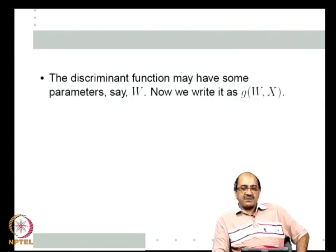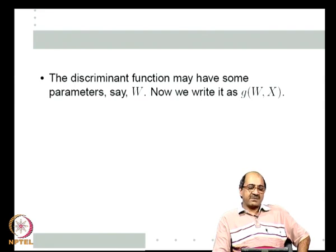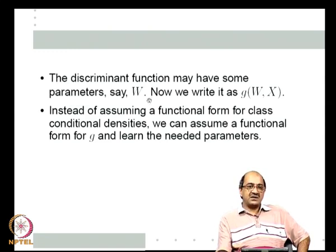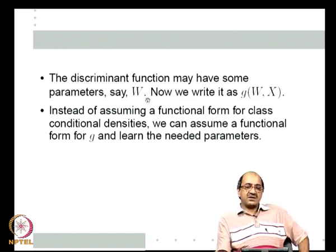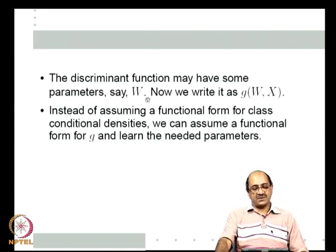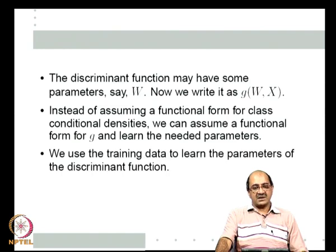In general, the discriminant function may have some parameters—say a vector of parameters denoted by w—and we write the discriminant function as g(w, x). The idea is that instead of assuming a functional form for the class conditional densities and then estimating them, we can think of a particular functional form for g and then estimate the needed parameters directly from the training samples. That is the basic idea of discriminant function based classifiers: we use the training data to learn the parameters in the discriminant function.